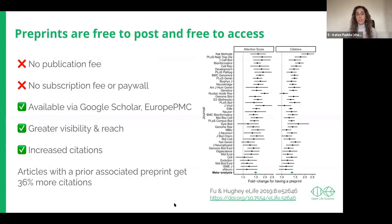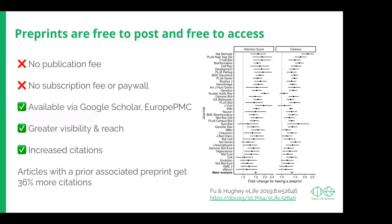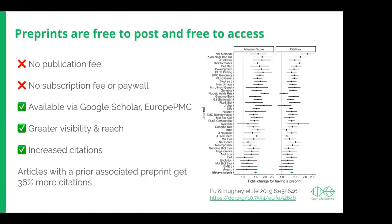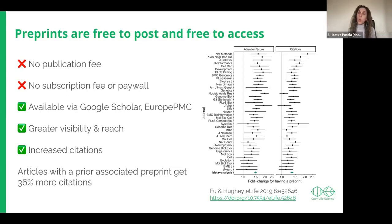Another important benefit is that preprints are free to both post and access — there is no publication fee as you may encounter with open access, no subscriptions or paywalls, which means you can reach quite a wide audience. A number of indexing services such as Google Scholar and Europe PMC include certain preprints, and PubMed is running a pilot related to COVID-19 preprints, so you can reach a wide audience, which can be useful in garnering attention for your study.